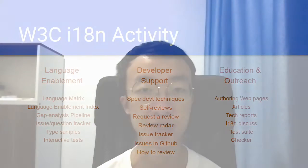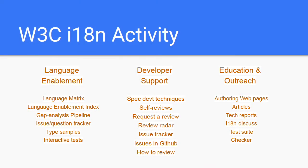In this video, I will briefly describe our work in the W3C internationalization activity. Our work is divided into three parts. Language Enablement is about gathering and making available requirements for the support of local writing systems and languages on the web.